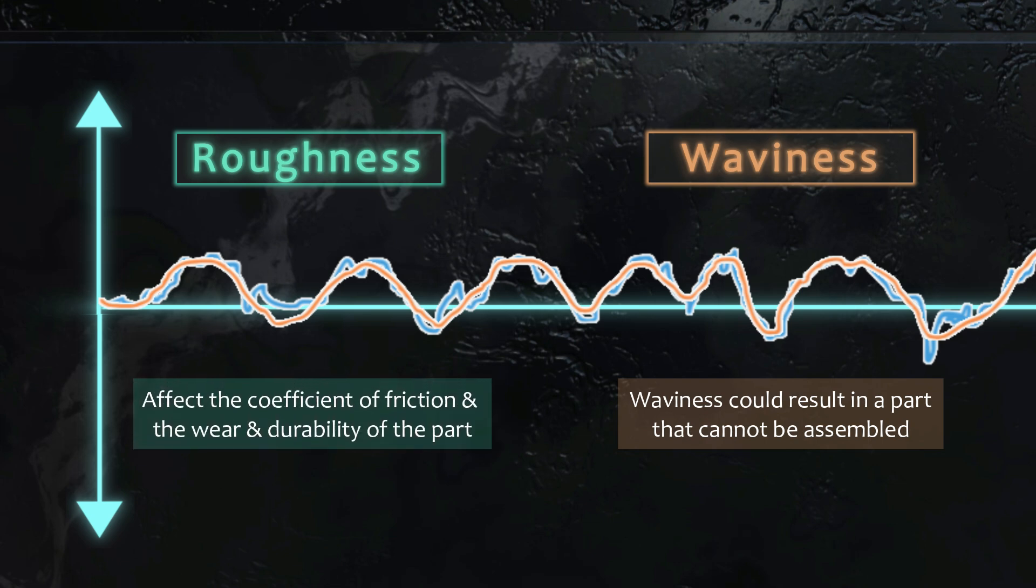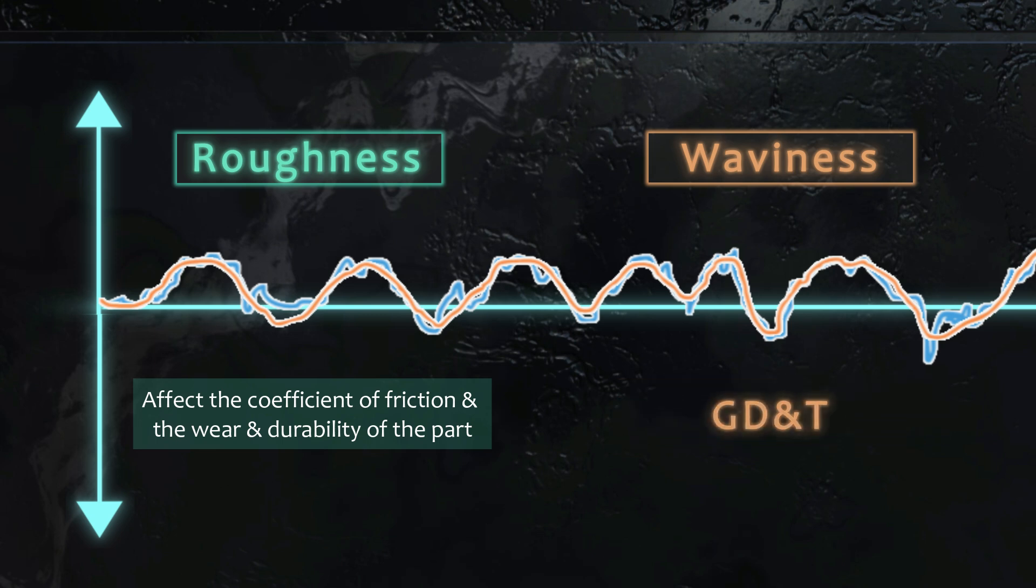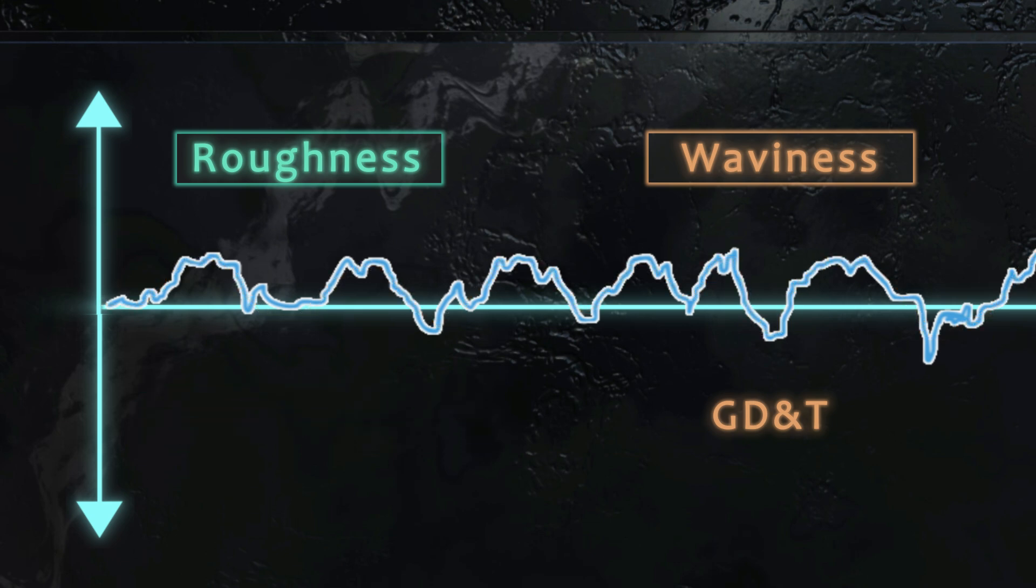Although there are parameters to control the waviness, the waviness profile is large enough to be controlled by tolerancing methods like GD&T. Therefore, it is of less significance and used only in specific cases. But the roughness profile needs special parameters.